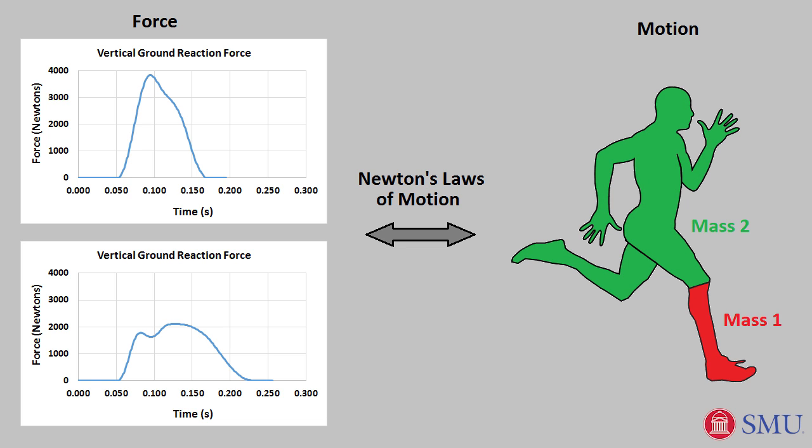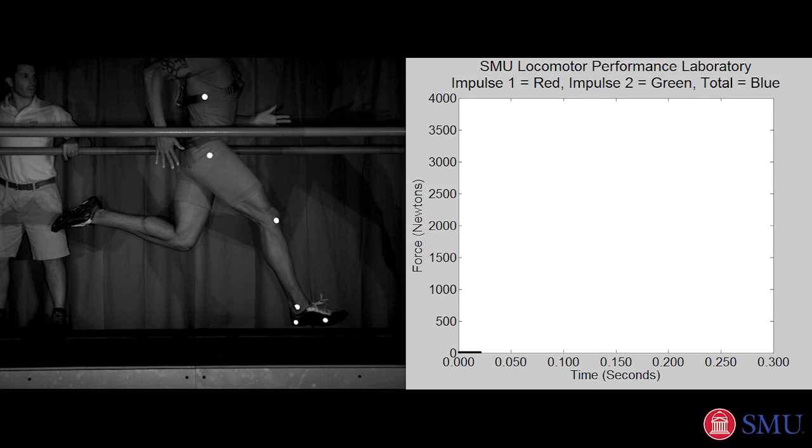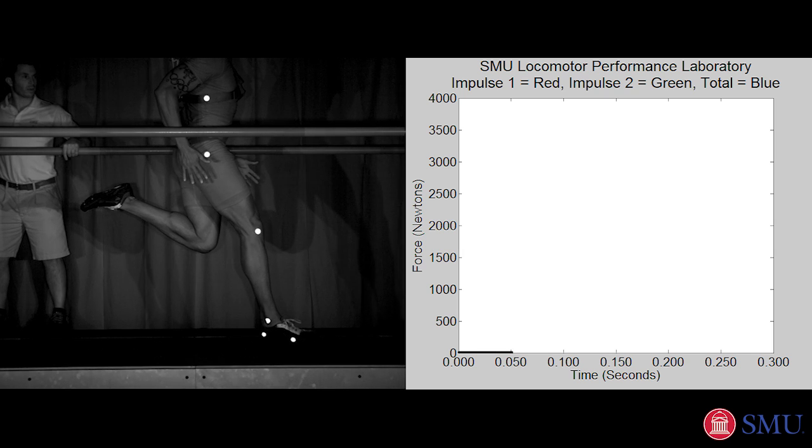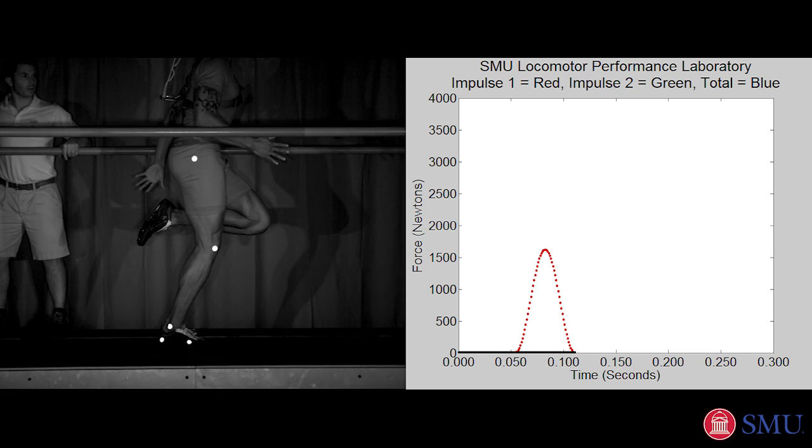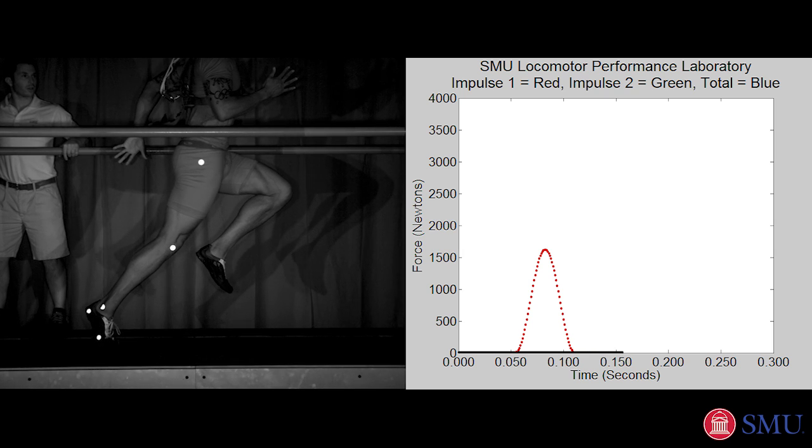Mass two consists of the rest of the body. An impulsive force results from the vertical collision of the lower limb with the running surface. The magnitude and timing depend on the vertical acceleration of the ankle.